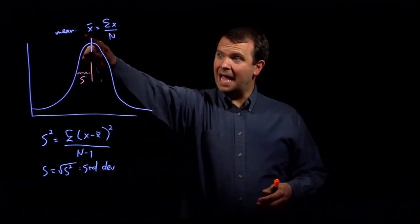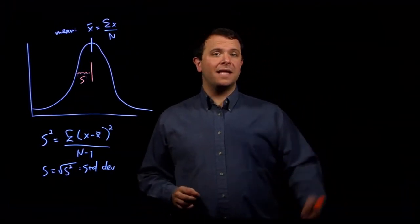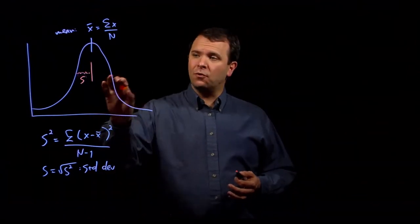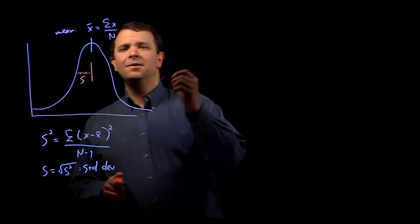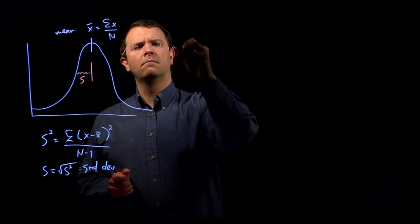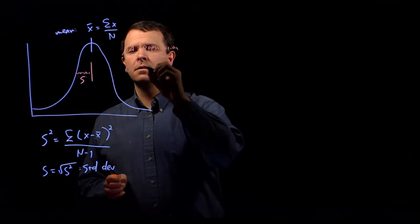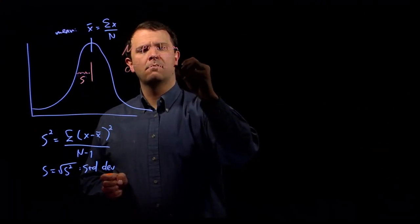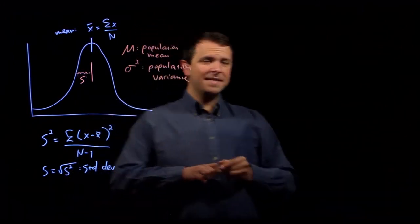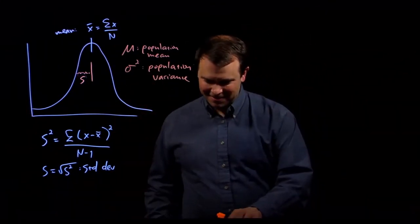And the sample mean and the sample variance are just estimates of the underlying population mean and population variance. And so for a standard distribution like this, we write these as mu and sigma squared. And this, of course, explains why I wrote sigma here and then went no, backup. We'll come back to sigma here in a moment.